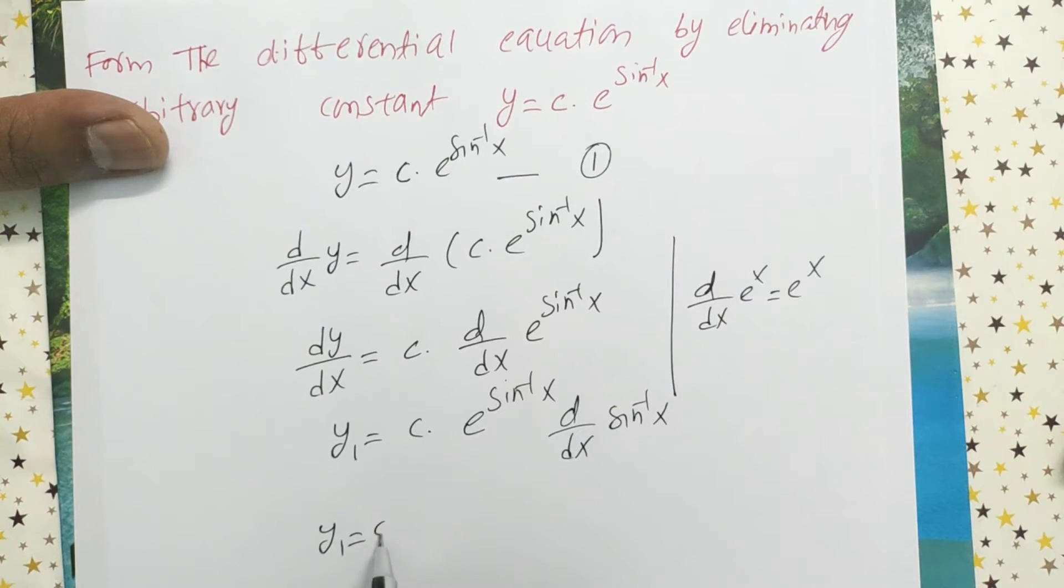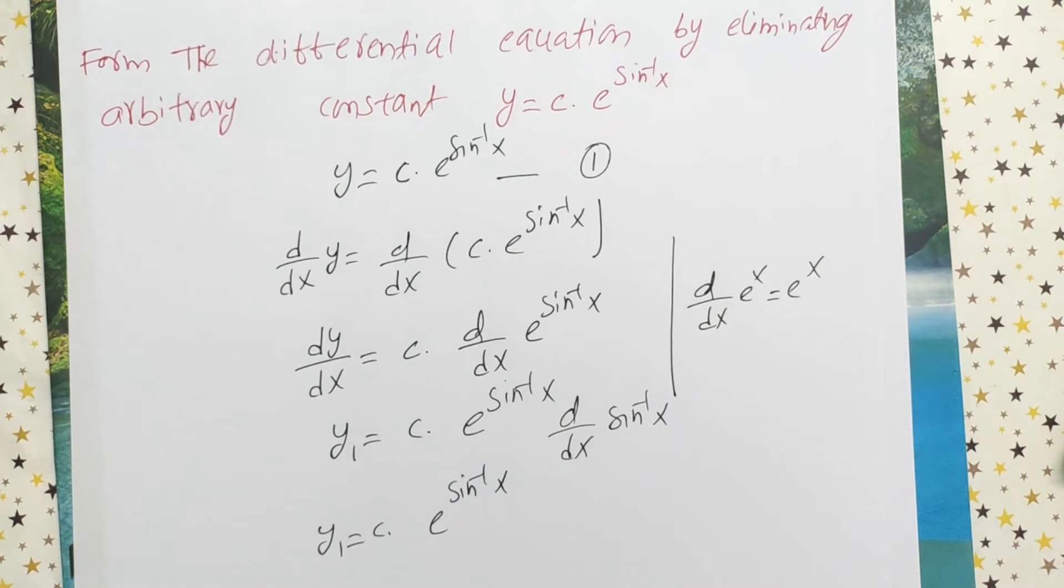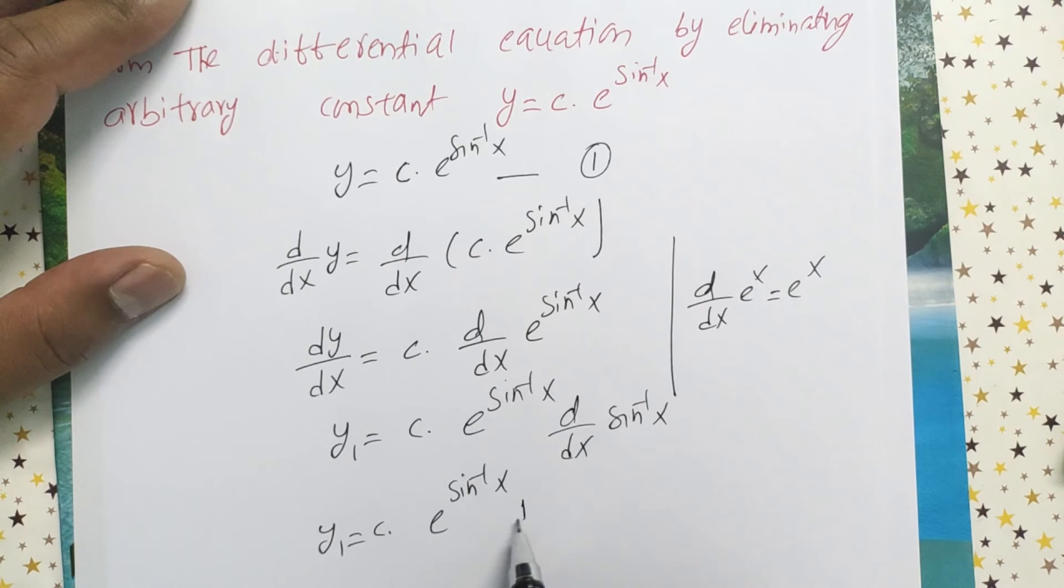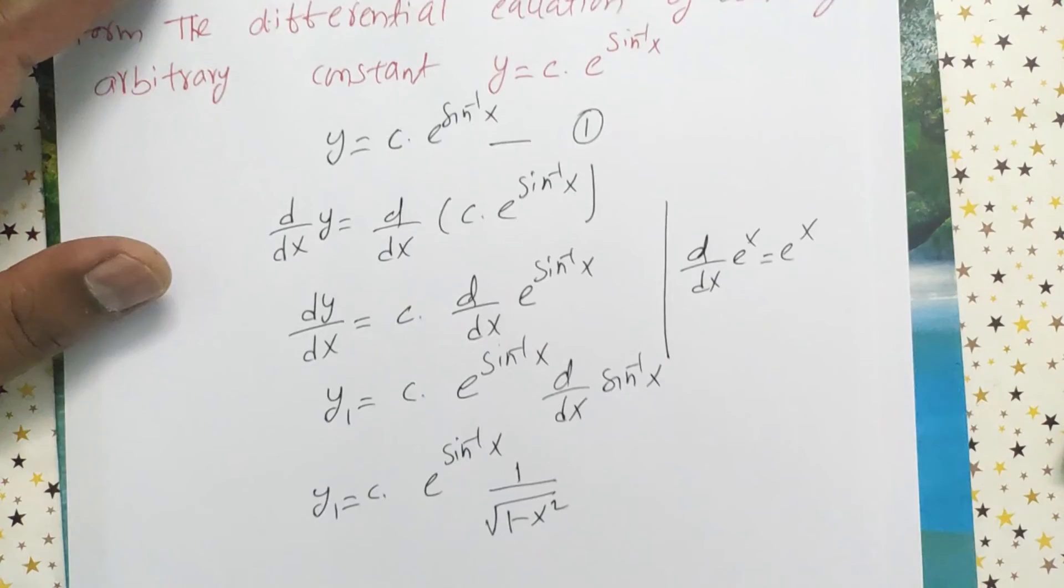Now y1 equals c times e to the power sine inverse x times d by dx of sine inverse x. The derivative of sine inverse x is 1 over root of 1 minus x square.